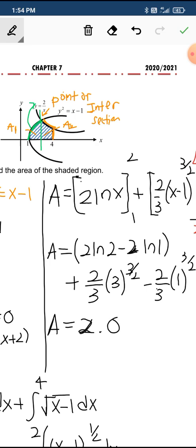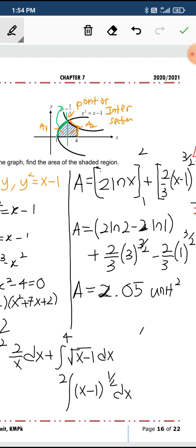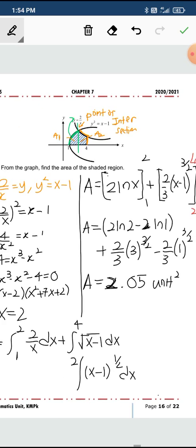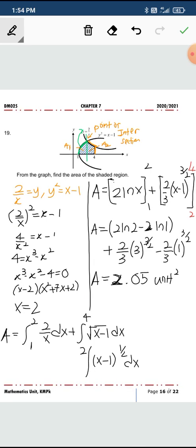So when you simplify this you get the value 2.05 unit square. So this is how you solve this question. All right thank you very much.